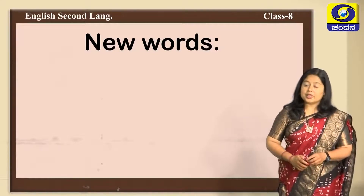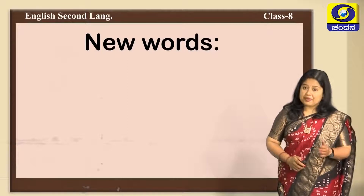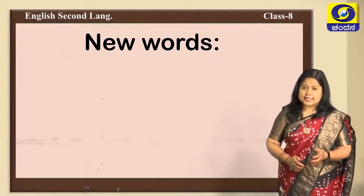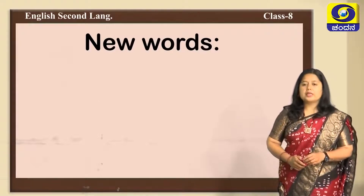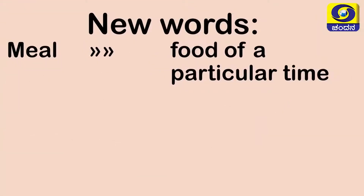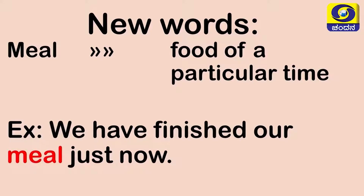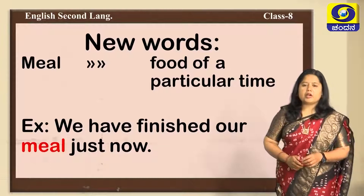Children, there are some new words that you have come across while reading the lesson which we haven't seen in the previous part. Some of those words are listed here with their meanings and example sentences for better learning. 'Meal' means food of a particular time. Example sentence: 'We have finished our meal just now.' Here we are not mentioning the specific time of the food consumed but collectively call it a meal.